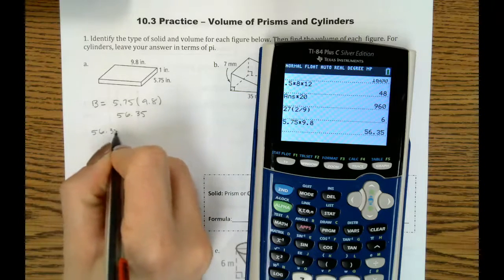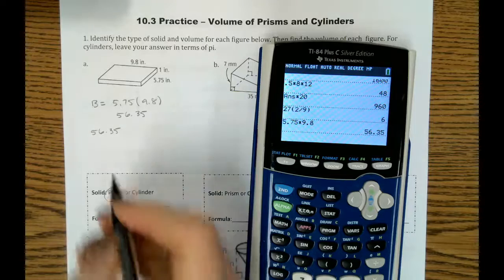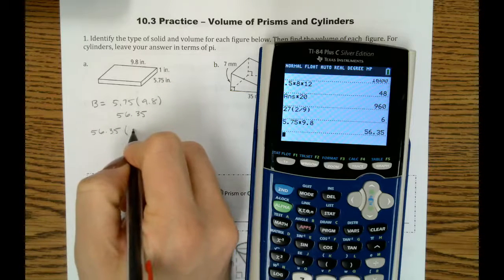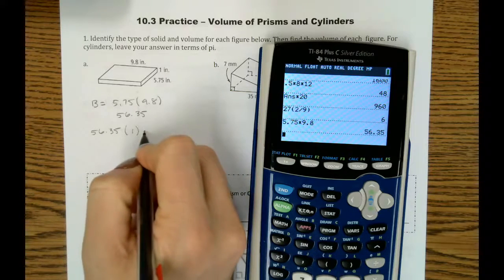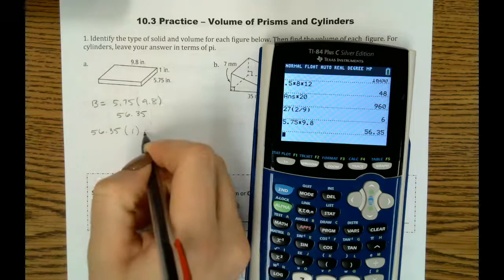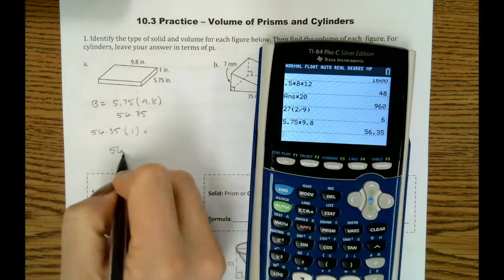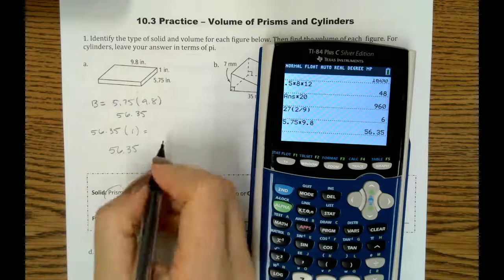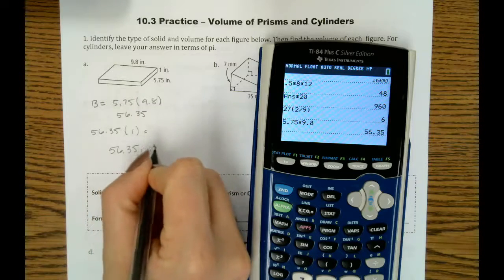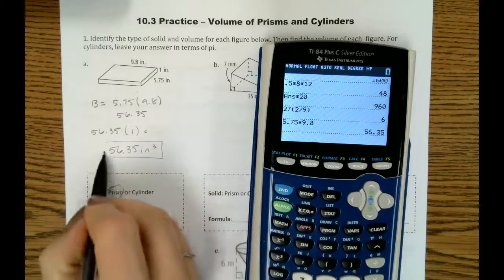So we'll take that 56.35, and now we have to multiply it by the height, which is 1 inch. So that gets us 56.35 cubic inches once we multiply that out.